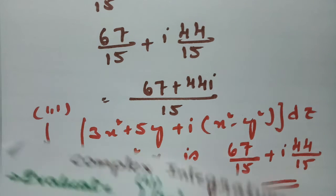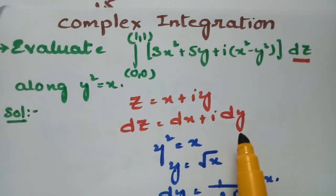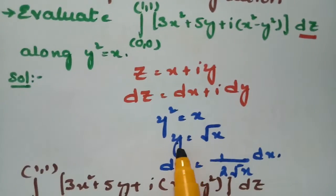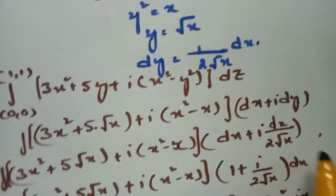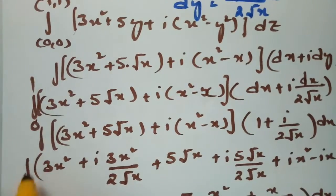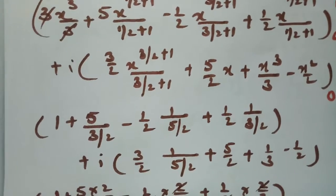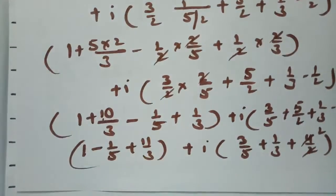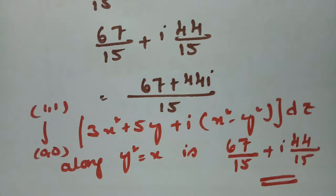To recap: given z = x + iy, dz = dx + i·dy, curve y² = x gives y = √x and dy = 1/(2√x)dx. After transforming all terms in x with limits 0 to 1, integrating and substituting limits, the final answer is 64/15 + 44i/15. If you don't understand, go through the video one more time. Please share with your friends and subscribe.